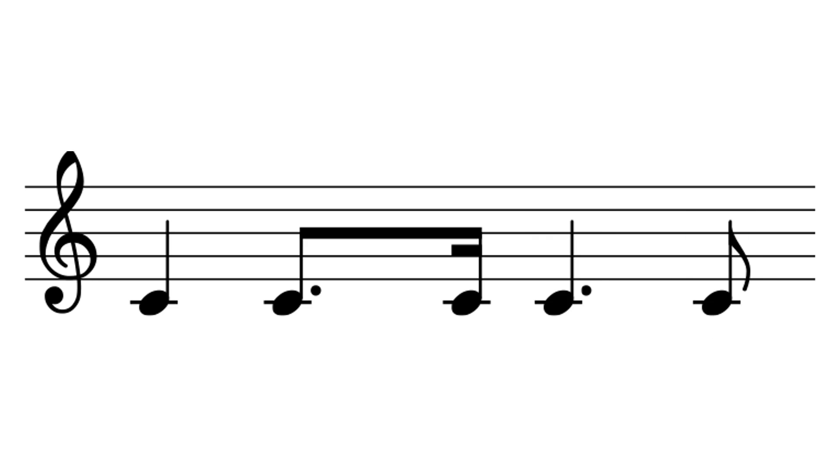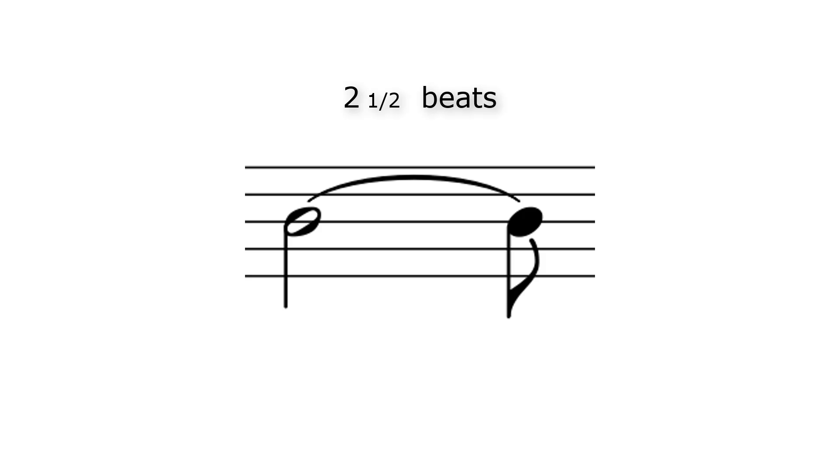How would you write down a note with a duration of two and a half beats? Well, you can do that as follows. First a half note, which is two beats, followed by an eighth note, which is a half beat. And then you can just tie them together.